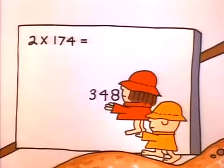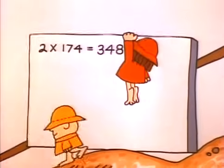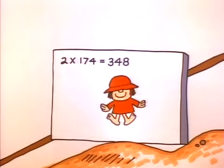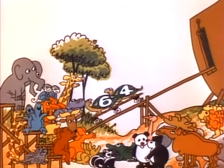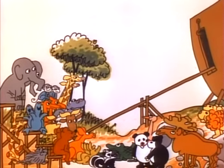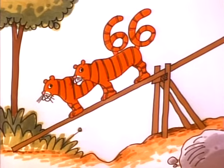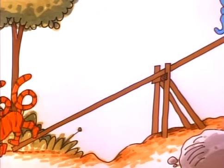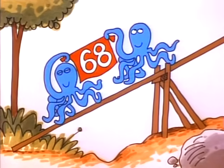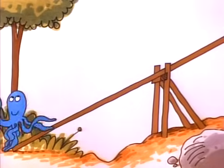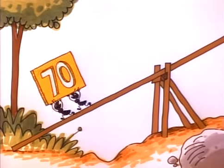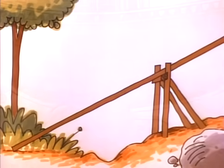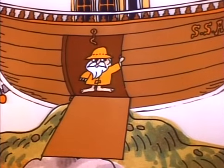That's three hundred and forty-eight. It's elementary! Twice thirty-two is sixty-four. Twice thirty-three is sixty-six. Twice thirty-four is sixty-eight. Twice thirty-five is seventy. Elementary! Yes, it's elementary!